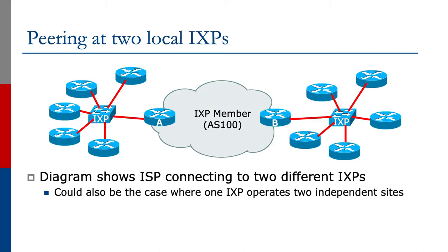The diagram shows a potential setup. We have the Exchange Point member sitting in AS100. Router A connects to one Exchange Point and router B connects to the other Exchange Point. This could also be the case where one Exchange Point operates two independent sites. For scaling IXs, once we get beyond needing two Ethernet switches, members usually request that the IX sets up two independent physical locations. We don't want to join those two IX switches together in the two separate locations, but run the two locations completely independently.